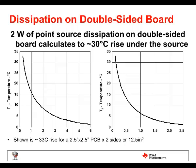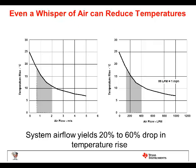Here's an example plot using the formula. You've got a 2.5 inch by 2.5 inch board — that's 6.25 square inches times 2 sides, equaling 12.5 square inches. Dissipating 2 watts over it, you can see about a 33 degrees C rise in temperature. Air can make a big difference, but a lot of times boards are packaged in plastic cases with no air movement. With no air flow at all, you've got a 25 degrees C temperature. At 88 linear feet per minute, or 1 mile per hour, that drops to about 20 degrees C — a 20% drop. At 4 or 5 miles per hour, it drops to 10 degrees C, a 60% drop. So air flow really makes a huge difference.